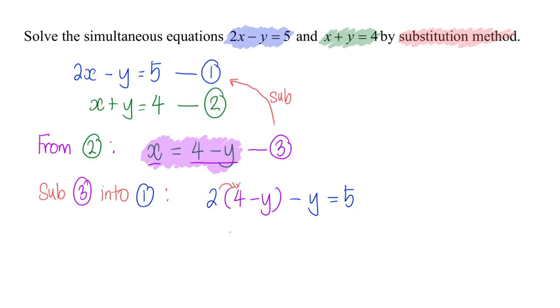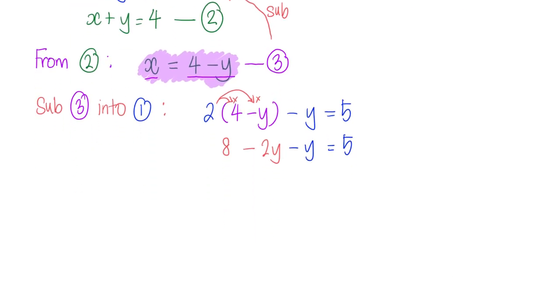2 times 4 is 8, 2 times negative y is negative 2y. I still have my minus y and 5 here, and just need to solve for this now.